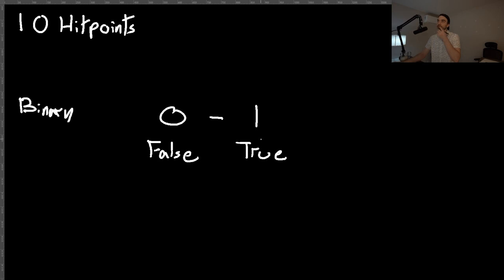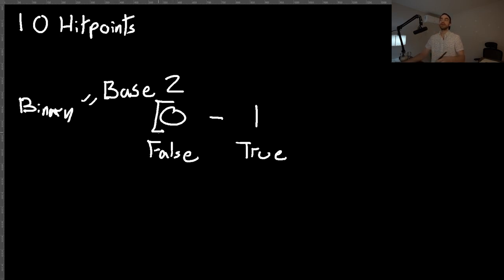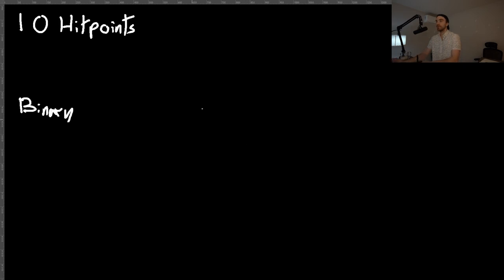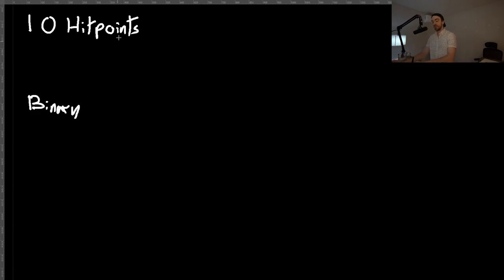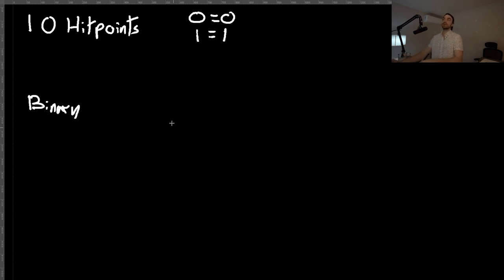Binary is kind of like the decimal system, but it's base two because you have two different symbols to express values. Instead of zero through nine, you only have zero and one. So: zero is equal to zero, one is equal to one, and at that point we've already run out of symbols. Just like in decimal, we carry it over to the left — so one-zero in binary is equal to two.